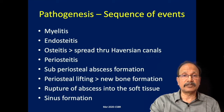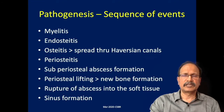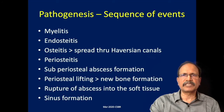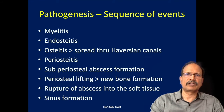So the easy-to-remember sequence of events is: myelitis → endosteitis → osteitis → periosteitis → subperiosteal abscess formation → periosteal lifting → new bone formation → rupture of abscesses into soft tissue → sinus formation. Sinuses may discharge pus or sometimes pieces of bone. This is typical of the chronic variety of osteomyelitis.